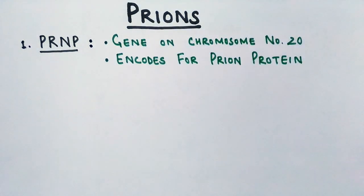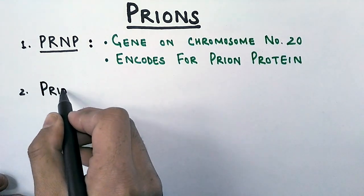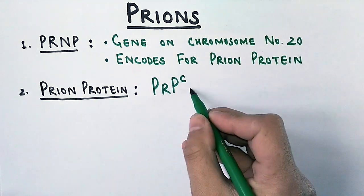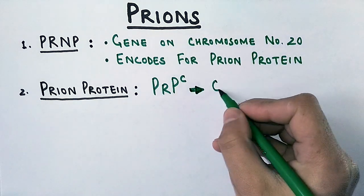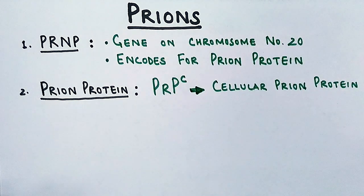So remember we have a prion protein and it has some functions in our body. Second thing we see here is prion protein, denoted by PrP^C. Why C here? Because it's cellular prion protein, in order to differentiate it from another abnormal protein which we are going to discuss later on.